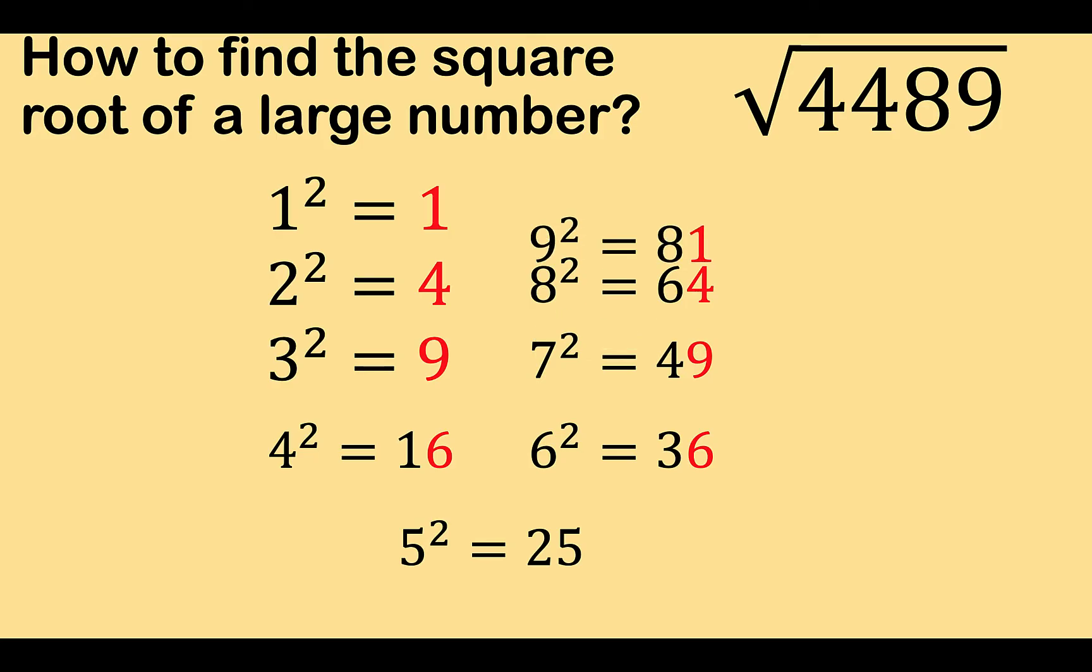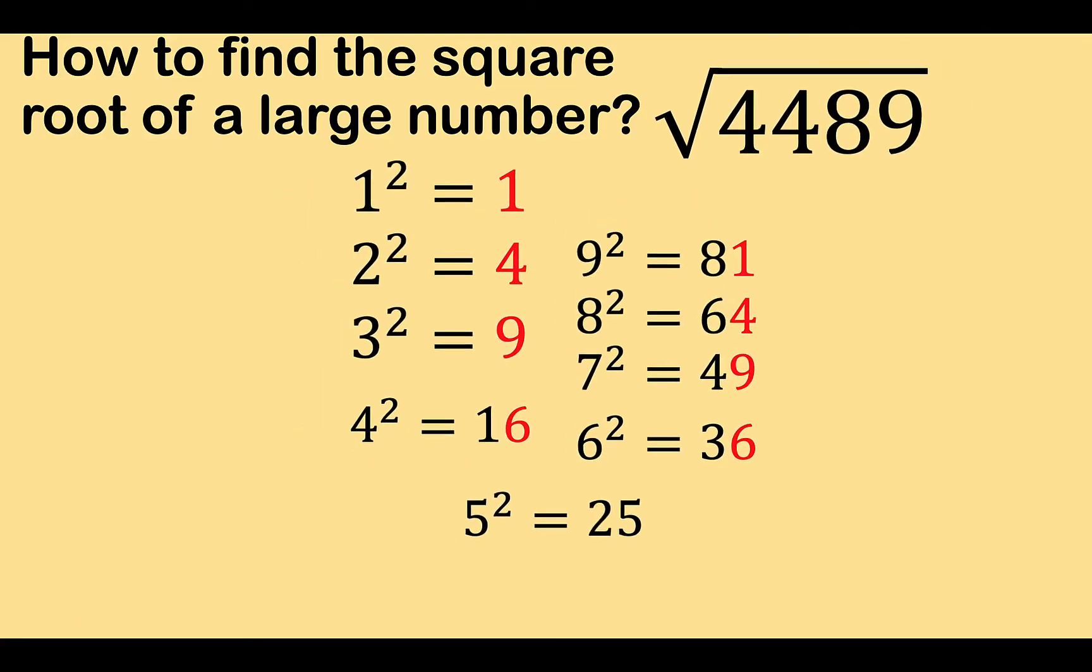You might be wondering why are there some red digits. Notice that the square of 1 is 1 and the square of 9 is 81. They have the same unit digits. The square of 2 is 4 and the square of 8 is 64. Again, you have 4 here and the unit digit of 64 is 4. The square of 3 is 9 and the square of 7 is 49. Again, they have the same 1's digits. And then the square of 4 is 16. The square of 6 is 36. The unit digit here is 6 and the unit digit here is 6. And 5 squared is 25.